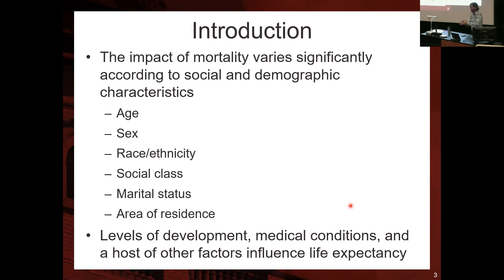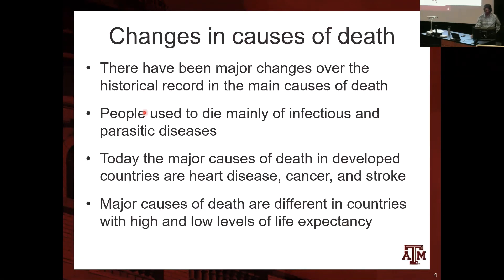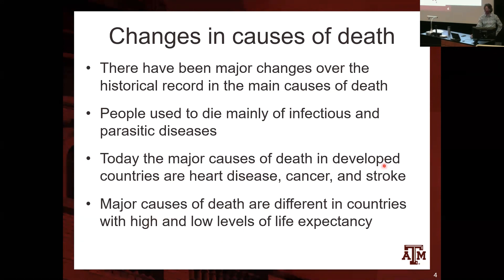Levels of development, medical conditions, and a series of other factors influence life expectancy by influencing mortality. The average number of years people would live based on current mortality rates is given by the life expectancy estimated in life tables. There have been major changes over the historical record in main causes of death — people used to die mainly of infectious and parasitic diseases. Today the major causes of death in developed countries are heart disease, cancer, and stroke. In less developed countries, higher rates of death are caused by infectious and parasitic diseases.